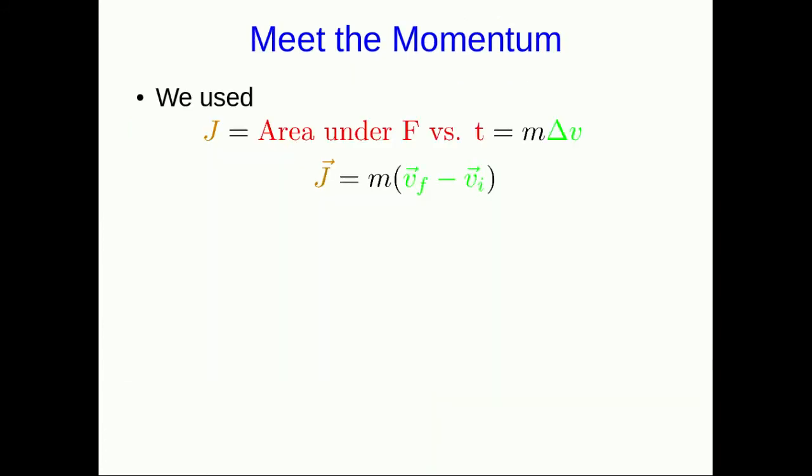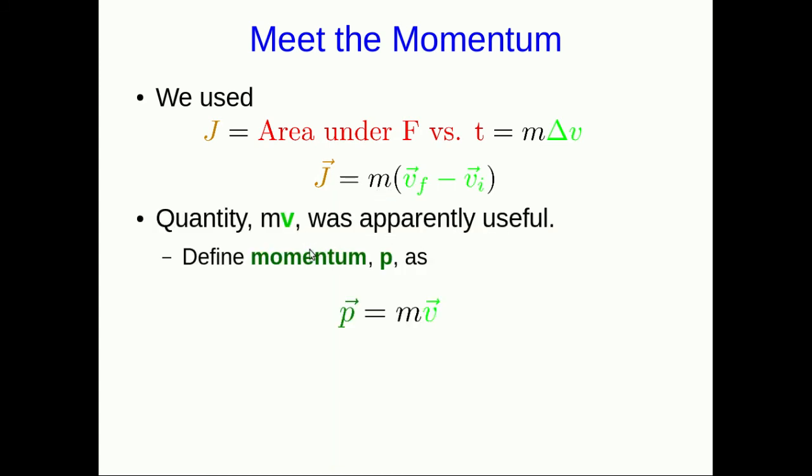We've been using this equation that impulse is m delta v, or m times vf minus vi. Apparently this quantity m times v is sort of useful. This is what we're going to call the momentum, represented by p—I guess because m was taken for mass. So momentum is just mass times velocity. We'll talk more about how to think of a meaning for it later.